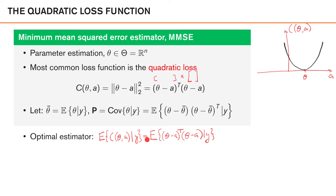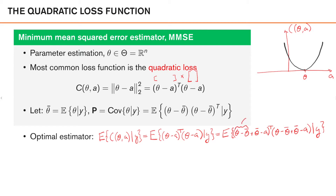We might call this trick 'adding an intelligent zero' — it simply simplifies the calculations. In this case, we add and subtract theta bar in both terms. So what we get is that one part is a zero-mean random variable, and the other part — theta bar minus a — is just a deterministic value. So we have a zero-mean random vector plus a deterministic vector, and their product.